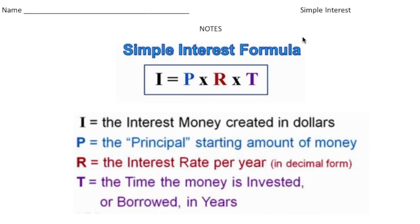Before we get into that we need to go over four definitions. Interest, or I, is basically the fee for taking out a loan. I'm sure you've seen commercials on TV for Visa or MasterCard — those companies charge a fee to borrow their money, and that's called interest. P, the principal, is how much money is being borrowed — that's the starting point.